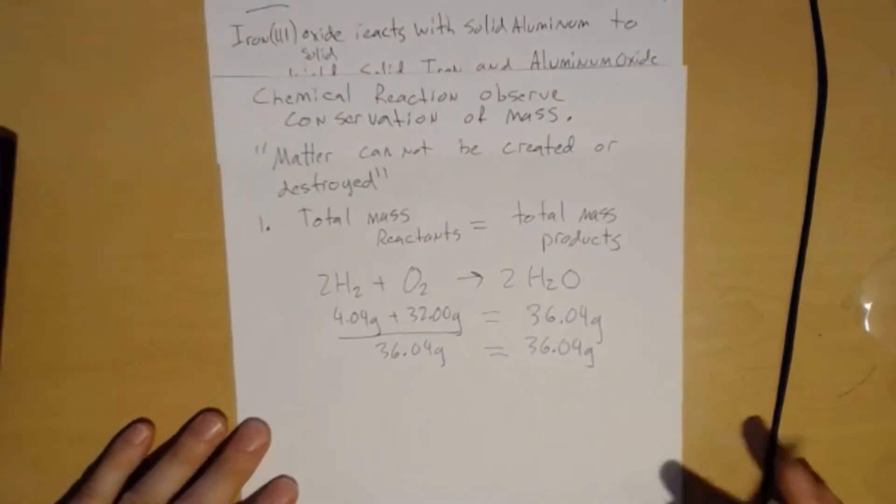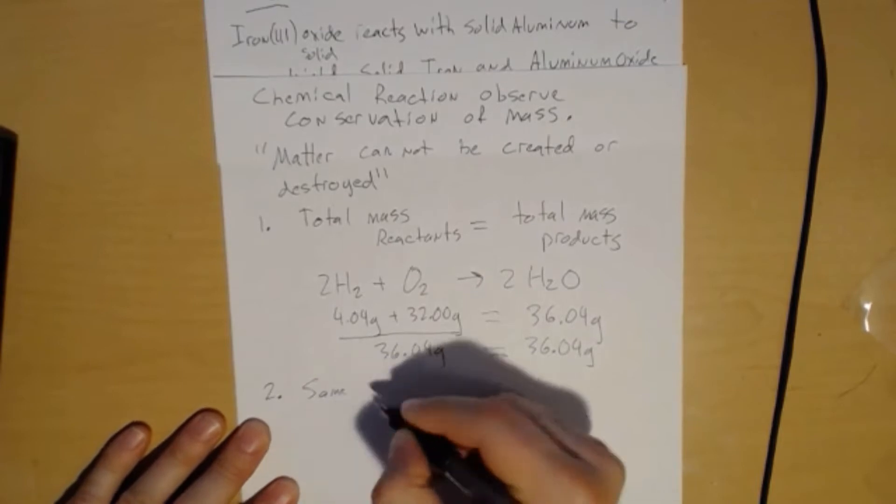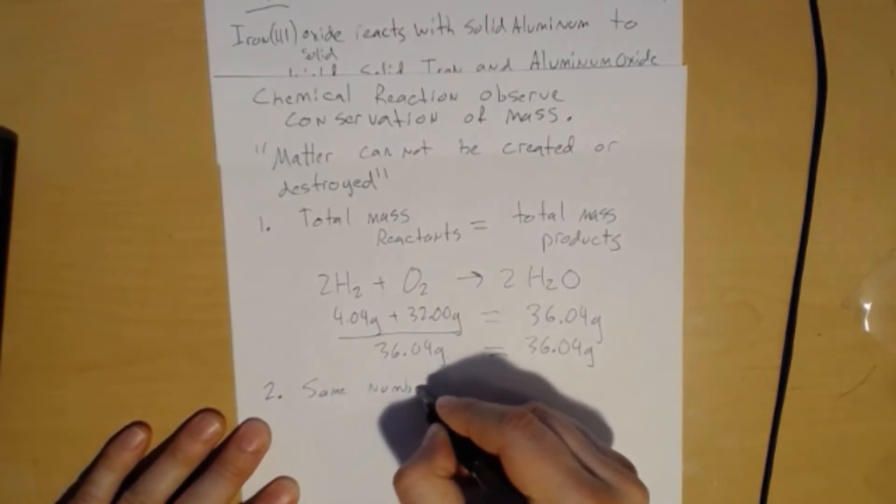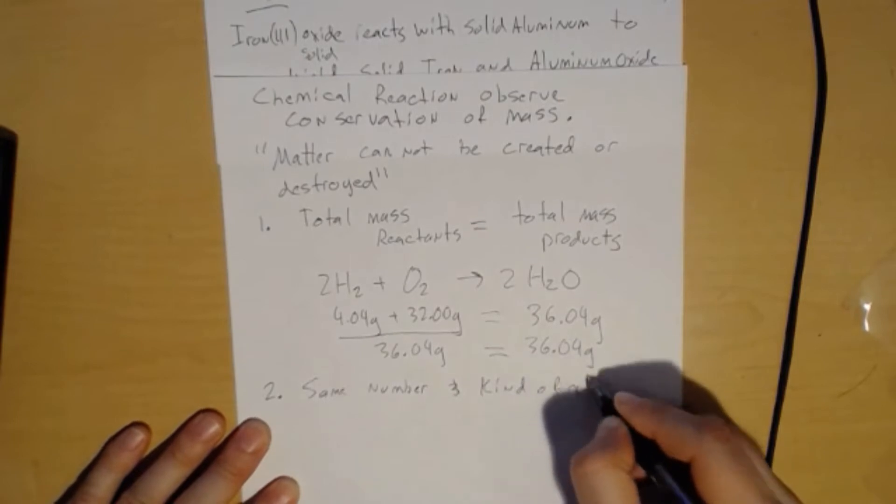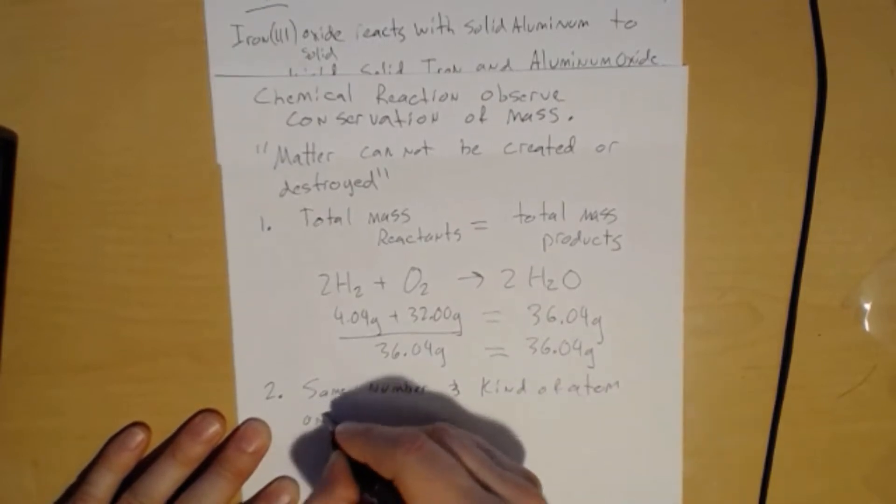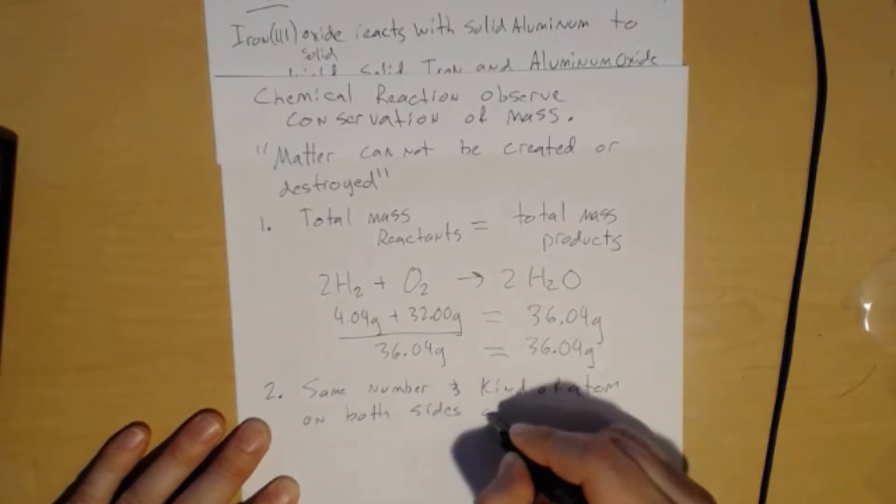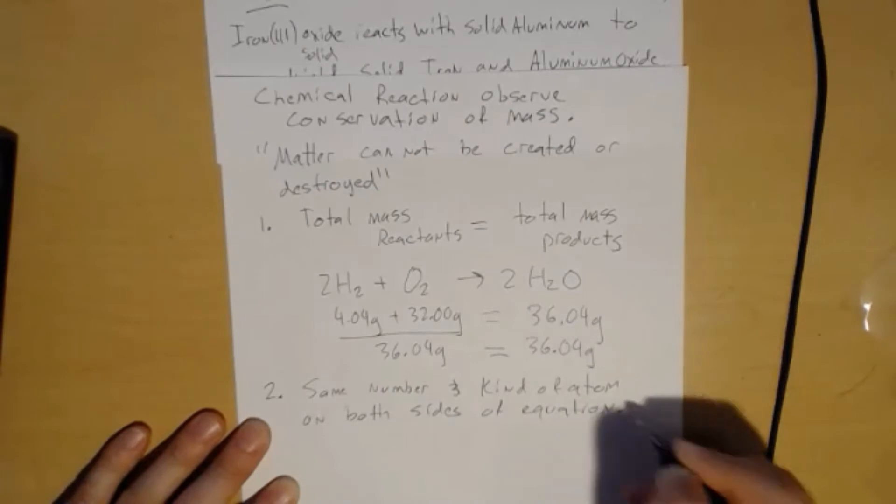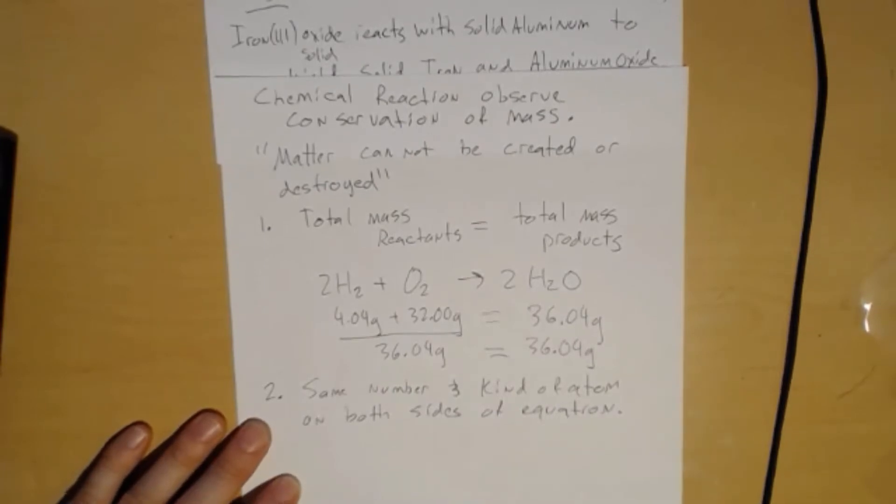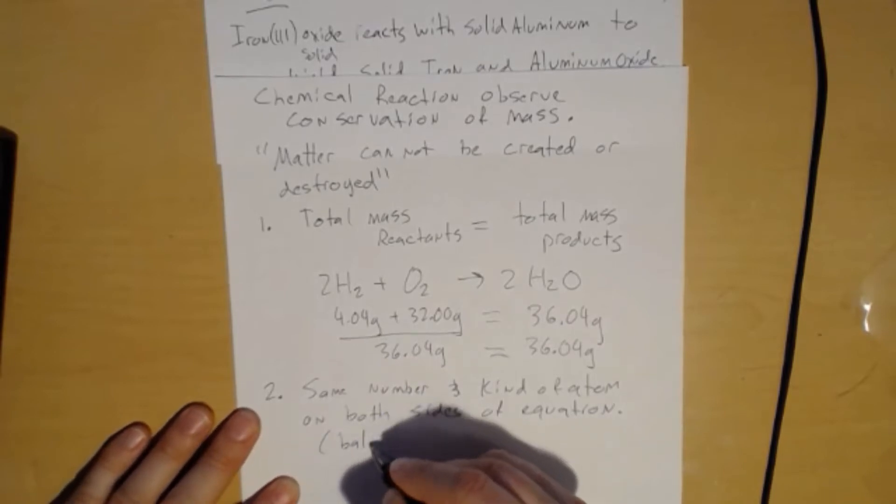Okay, so that's just the first corollary. The second corollary involves balancing. The second corollary is I have to have the same number and kind of atom on both sides of the equation. And so that's where the idea of balancing comes in.